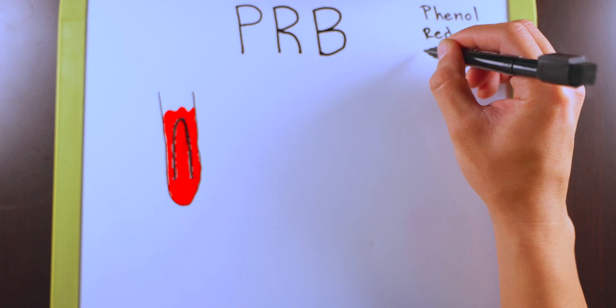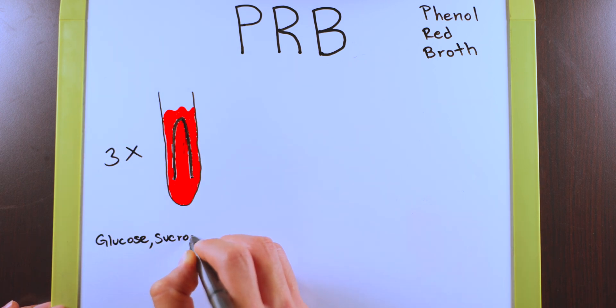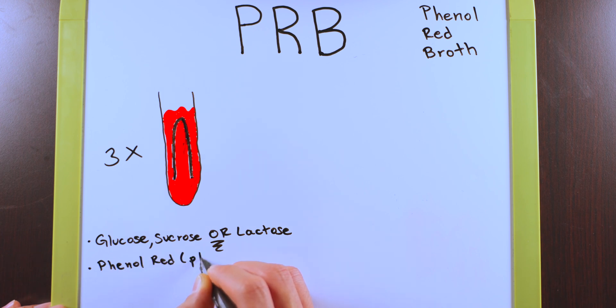Your PRB stands for Phenol Red Broth. Here you'll be given three test tubes with a red liquid inside, each of them containing either glucose, sucrose, or lactose. All three test tubes will also have Phenol Red as your pH indicator as well as peptones.